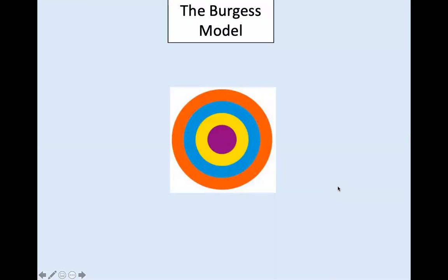We are going to look at the Burgess model. This was a model invented in 1925 by Mr Burgess. It's based on American cities and the model shows different areas of the city laid out in concentric zones.